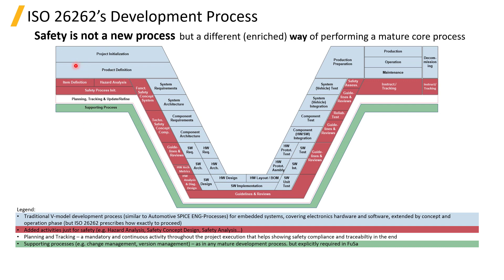The blue color represents the traditional V-model process, which is addressed by the concept phase covering the entire development process from part 3 to part 7 of ISO 26262. The red color signifies additional activities such as HARA, safety concepts, safety analysis, and many more.